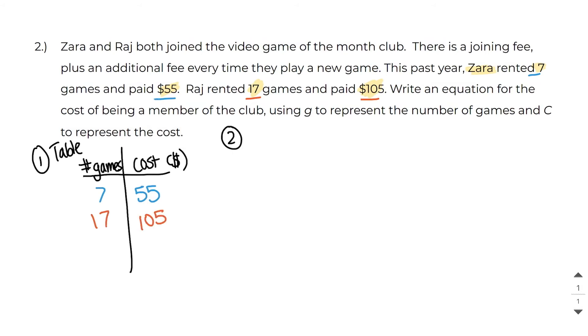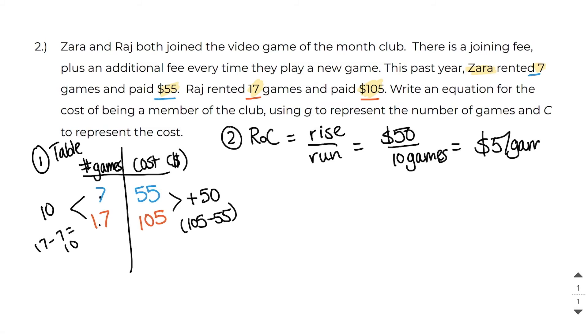Now I'm going to use the chart to find my rate of change. And to find the rate of change, you always do rise over run. And here we know that our rise, it went up by $50. And we figure that out by doing 105 minus 55. So this is $50. And we know that our run is 10 games because 17 minus 7 is equal to 10. So this is 10 games. And then we just divide these two values and we get $5 per game. So this right here is our rate of change.